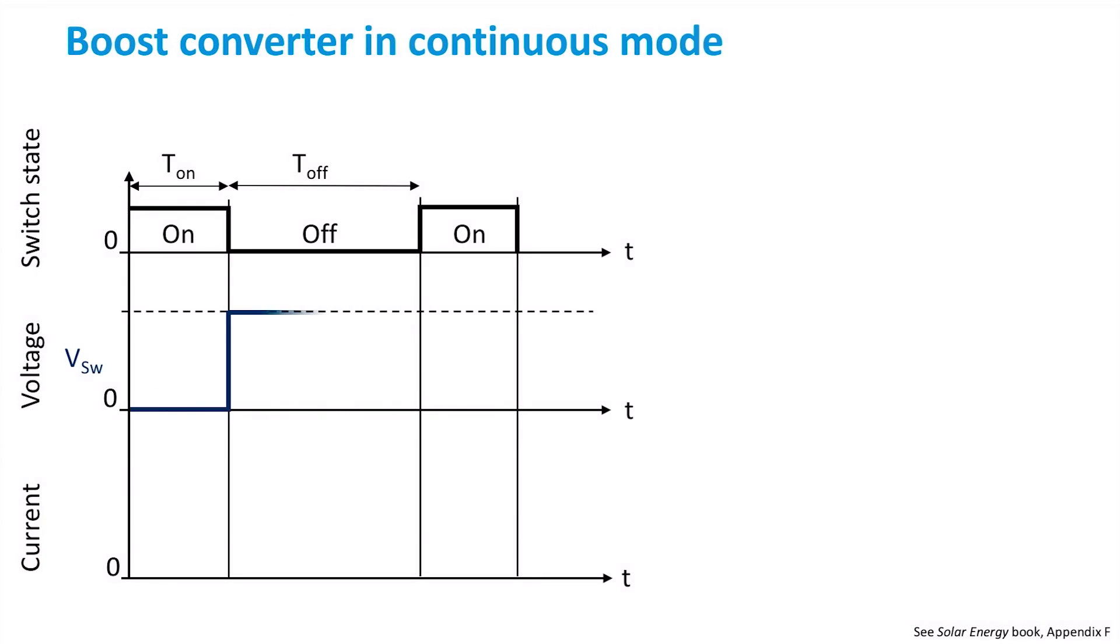In blue, the voltage across the switch is depicted, and of course, it is 0 when the switch is closed, and it reaches the output voltage value during OFF operation.